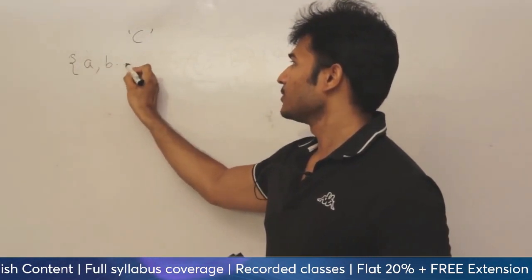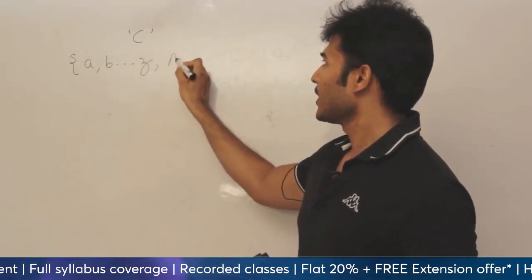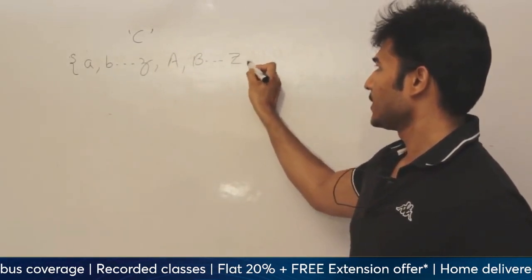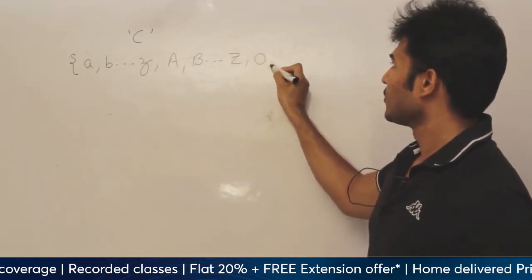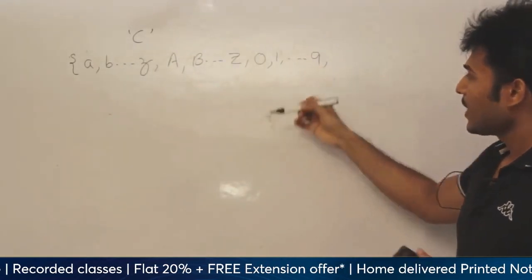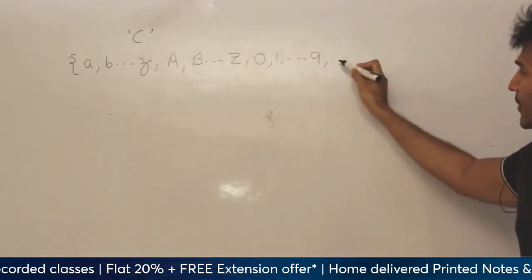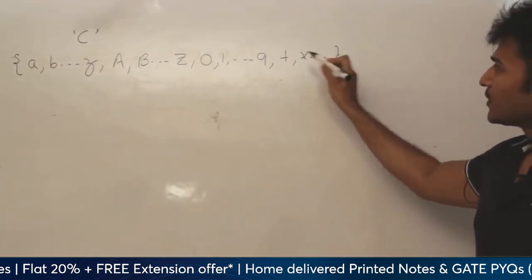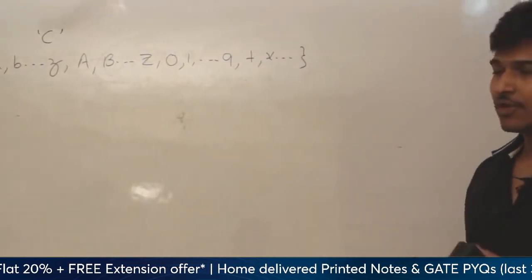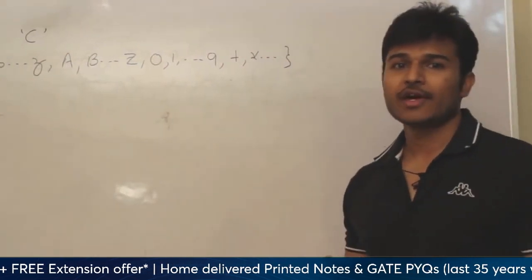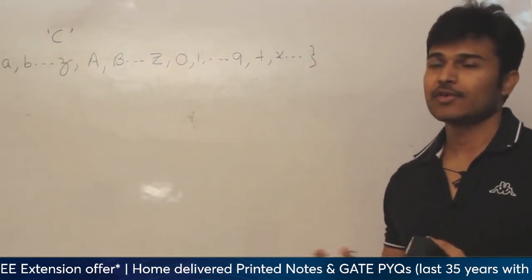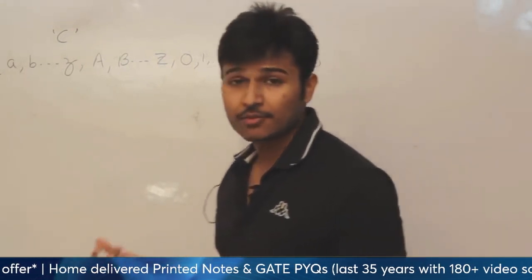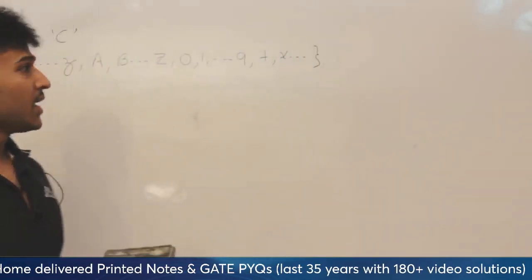Small a, small b, so on, small z, capital A, capital B, so on, capital Z, 0, 1, so on, 9 and some special symbols like plus, star, so on. So, this is a finite set. We are going to always use a finite number of symbols in order to represent a C program, in order to type a C program.